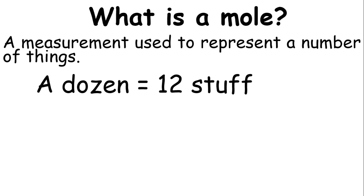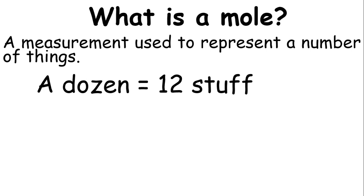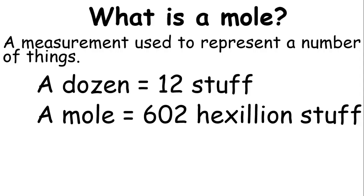For example, a dozen. A dozen means you have 12 things or stuff. A dozen of donuts, so you have 12 donuts. A mole is like that. A mole is equal to 602 hexillion stuff.